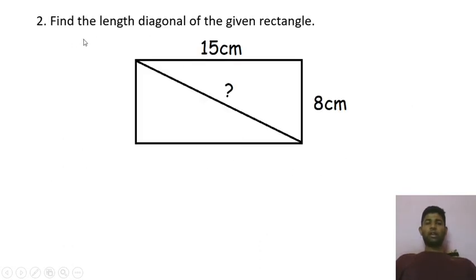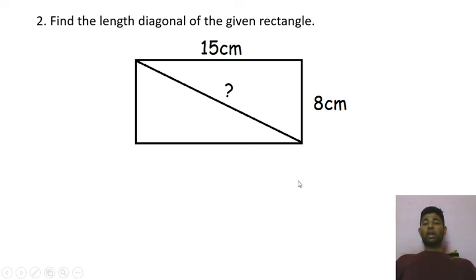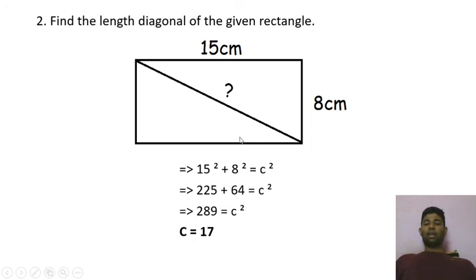Another question: find the length of the diagonal of a given rectangle. The length is 15 centimeters and the breadth is 8 centimeters. Every rectangle has 90-degree angles at its corners, so when you divide this rectangle by a diagonal, a right angle triangle is formed. You can apply the Pythagorean theorem where the diagonal acts as the hypotenuse. When you solve it, C equals 17, meaning the length of the diagonal is 17 centimeters.